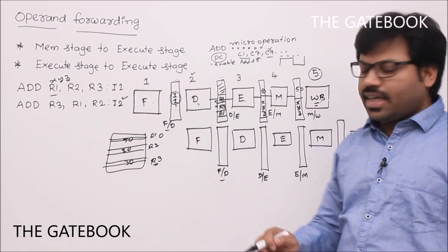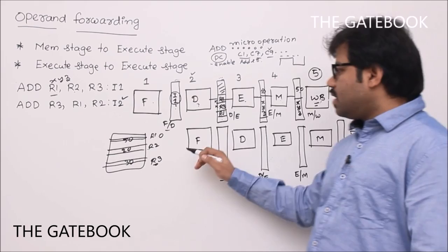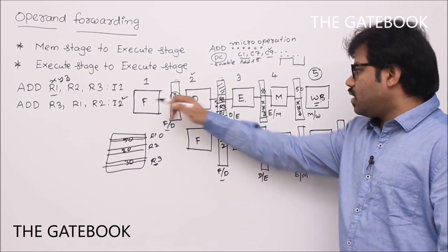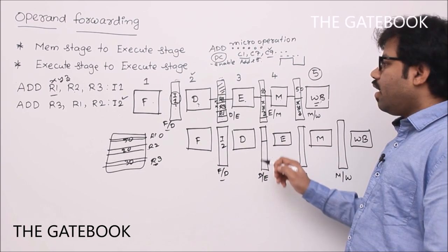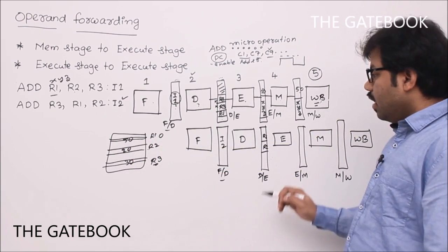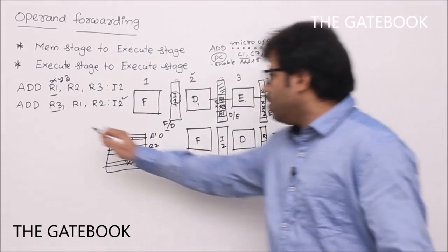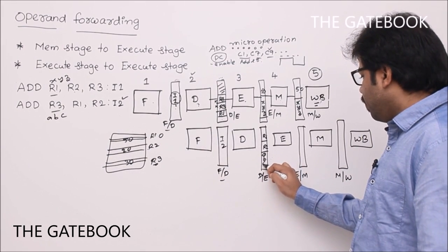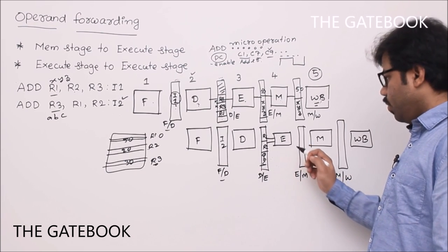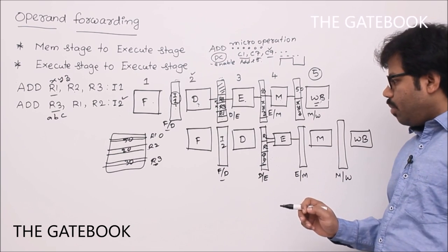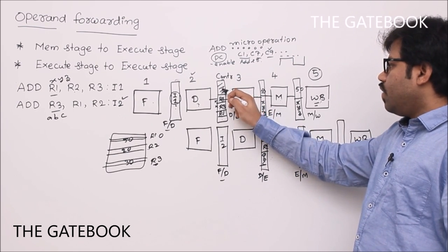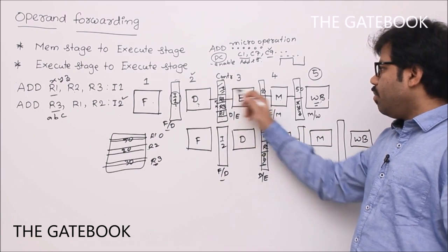In parallel, instruction 2 is also executed. Instruction 2 is fetched, then decoded — the contents of R1 and R2 are read from the register file, and the destination address of R3 (say 'abc') is forwarded. The execution stage adds R1 and R2. Some control signals are used at each stage and discarded; remaining signals are passed forward to the next stage for memory and write-back operations.